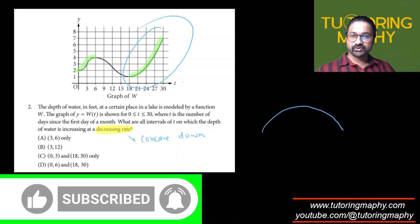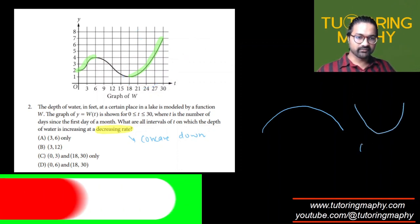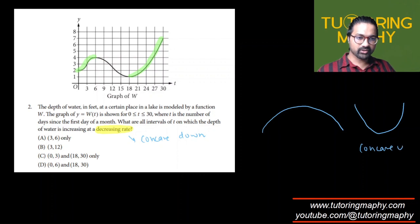Smiling face is concave up, and frowning face is concave down. So obviously it is not this portion because that is concave up.